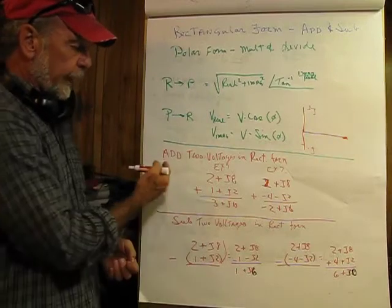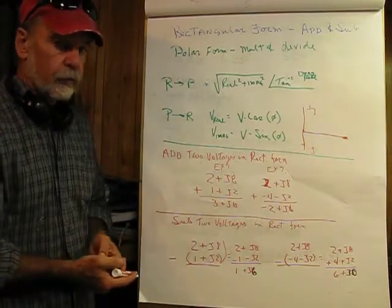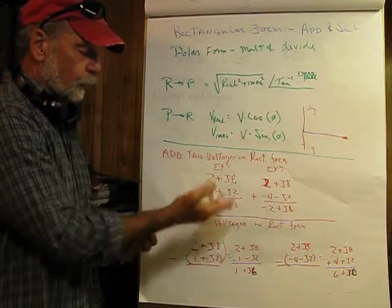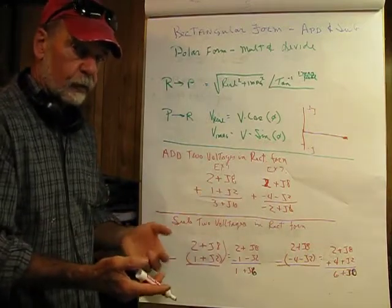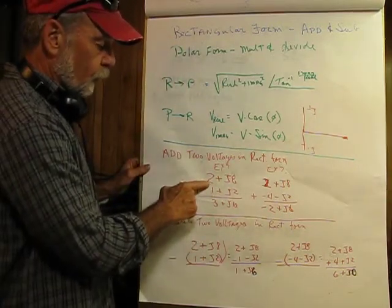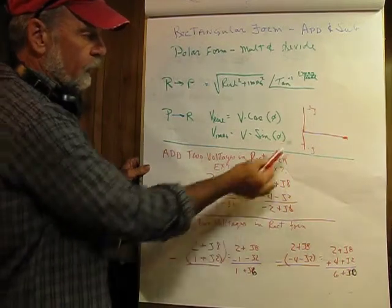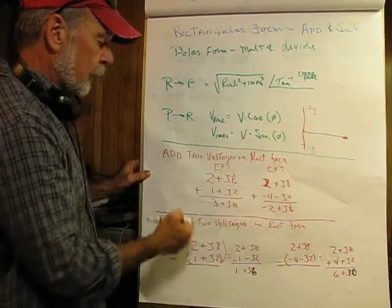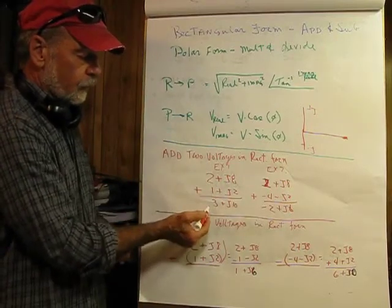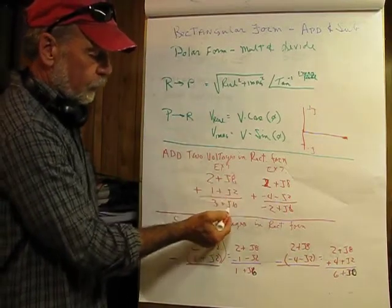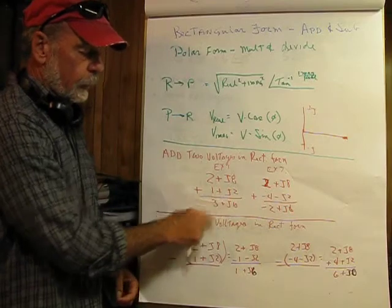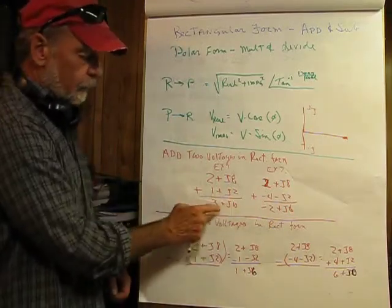Let's work through examples of adding two voltages — these could just as well be currents or impedances. We have one voltage which is 2 real plus j8, and we want to add to it 1 real plus j2. We add the like terms: 2 plus 1 gives us 3 real, and j8 plus j2 gives us j10. If we wanted to, we could convert this into polar form and figure out the angle by taking the inverse tangent of 10 over 3.